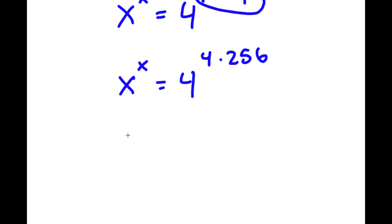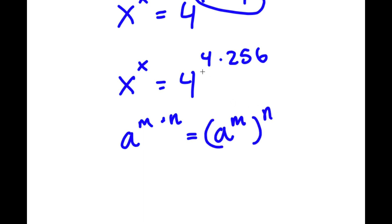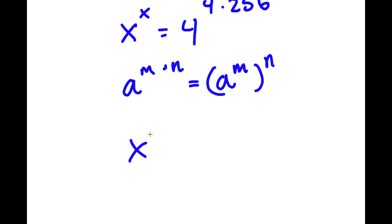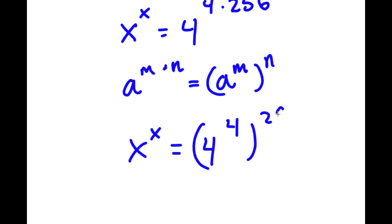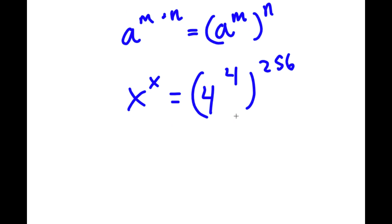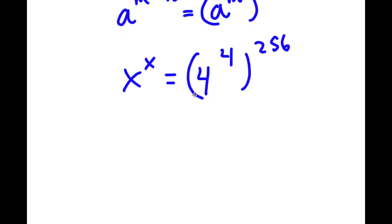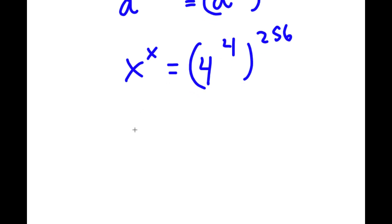Now, if I have something in the form a to the power of m times n, this is equal to a to the power of m to the power of n. So 4 to the power of 4 times 256 — I can rewrite that as 4 to the power of 4, to the power of 256. Now, 4 to the power of 4 is the same thing as 256. So I have x to the power of x is equal to 256 to the power of 256.